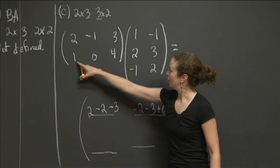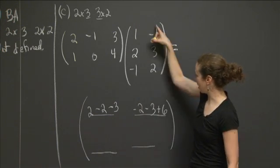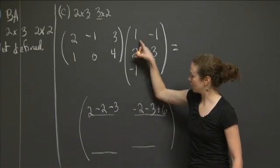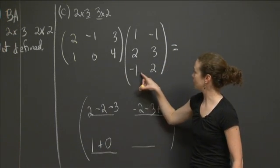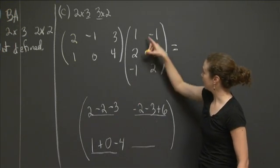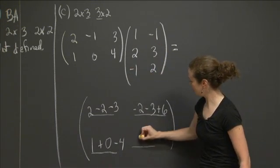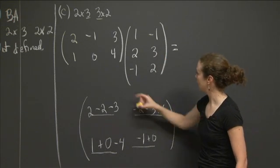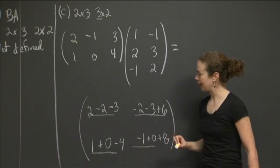OK. And then the bottom 2, I get row 2, column 1 over here. And then row 2, column 2 over here. So row 2, column 1 is going to be 1 times 1, plus 0 times 2, plus 4 times negative 1. So I get negative 4. And then here, row 2, column 2, I get 1 times negative 1. So I have negative 1, plus 0 times 3, plus 0. And then 4 times 2 is 8.